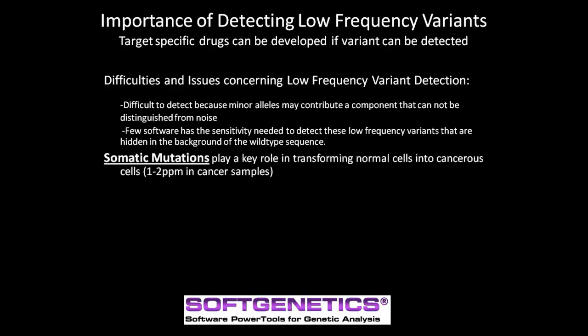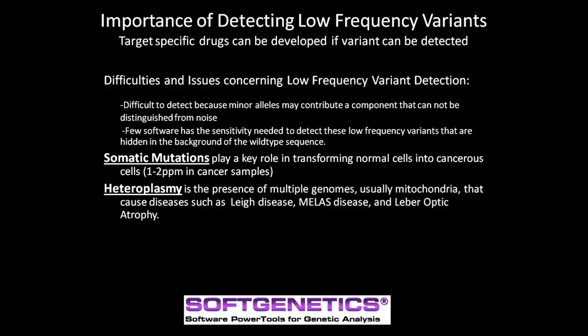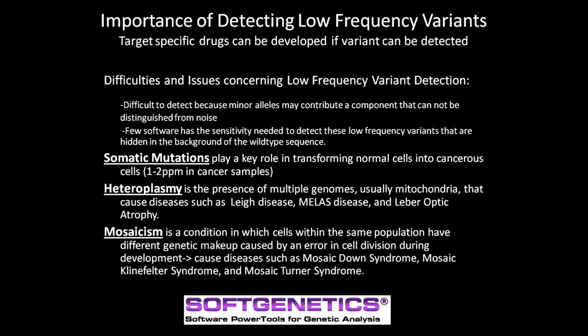Somatic mutation can change normal cells to cancer cells at very low concentration. Heteroplasmy is the presence of multiple genomes, most likely mitochondria, that can cause various mitochondrial diseases. Mosaic mutation is the different configuration of chromosomes and genes caused by error in cell division. By identifying possible areas of mutations, we can begin to develop therapeutic treatment for such diseases.